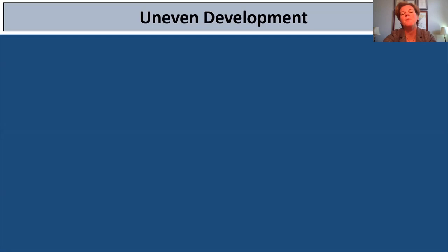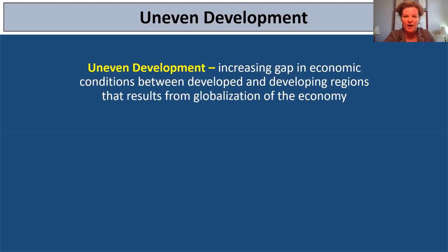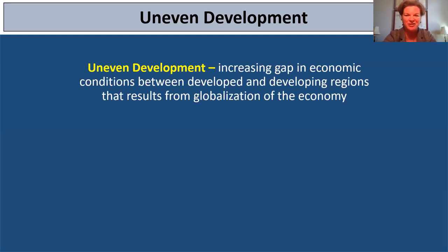Now let's talk about uneven development. Here's a definition: the increasing gap in economic conditions between developed and developing regions that results from globalization of the economy. We're focused on those conditions we just talked about, and largely those conditions are thought about economically. Inequalities exist among countries but also within countries. Think about scale — a huge concept in geography. We have different inequalities that exist regionally and at local scales, not just internationally from country to country.